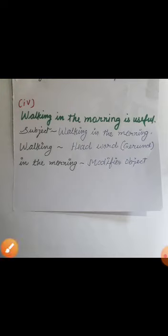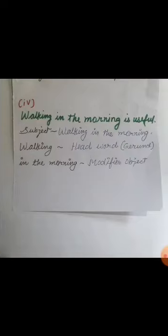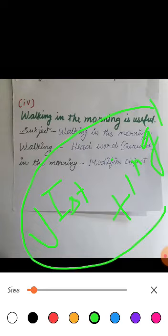Hello friends, we are studying the parts of subjects in this sequence. We will discuss some more examples. Your fourth example is: 'Walking in the morning is useful.' In this subject, the subject is 'walking in the morning' and 'walking' is the headward gerund type. The structure of a gerund is the first form of the main verb plus -ing. So 'walking' is the headward and 'in the morning' is the modifier object.